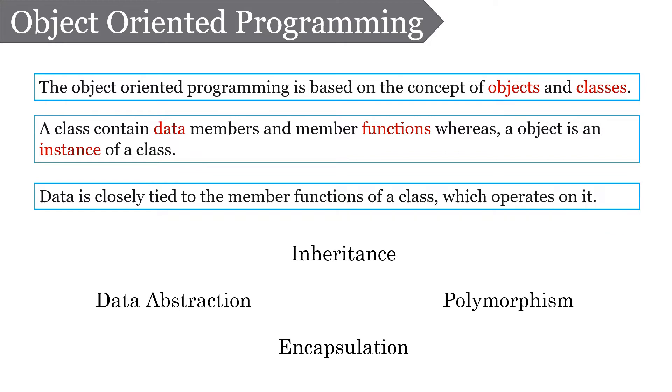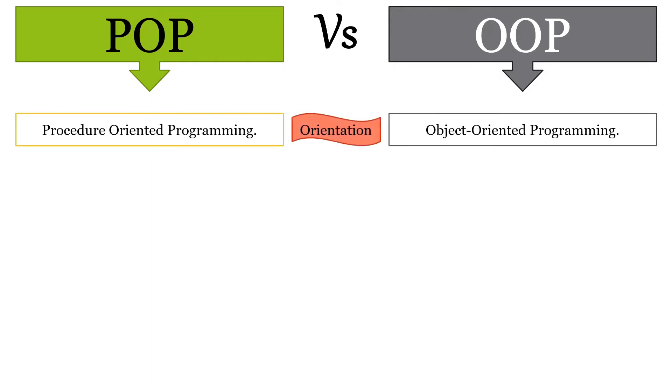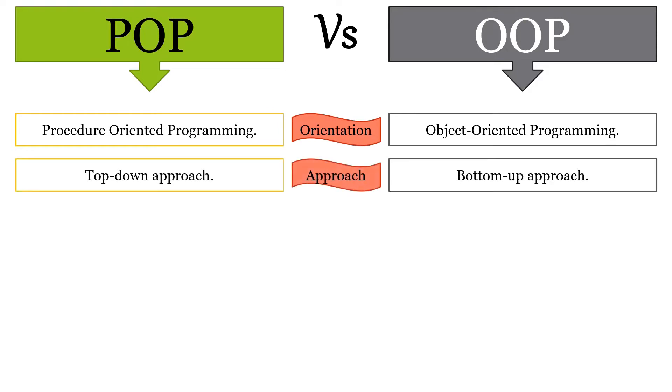Now when you are aware of procedure oriented programming and object oriented programming, let us discuss the differences between them. POP is procedure oriented programming whereas OOP is object oriented programming. In POP, the program is implemented in top-down approach whereas in OOP, the program is implemented in bottom-up approach.